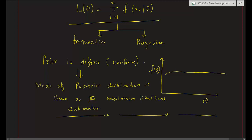In this class we discussed how we can use Bayes theorem when we have a continuous random variable or continuous parameter, and use the Bayes rule to estimate the posterior distribution of the parameter. In the special case when the prior is diffuse or uniform, the mode of the posterior distribution is the same as the maximum likelihood estimator. We can stop here and in the next class we will discuss more about the Bayesian method.